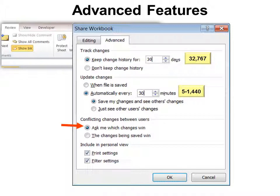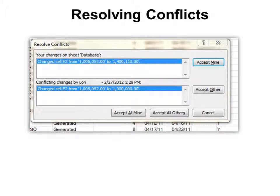When there are conflicting changes between users, you can choose 'Ask me which changes win' or 'The changes being saved wins.' To resolve conflicts with the 'Ask me' option, you'll see the conflict: somebody made this change to that cell and somebody else made a different change — which one wins, yours or the other user's?